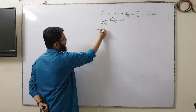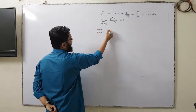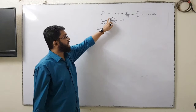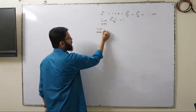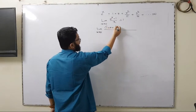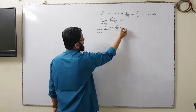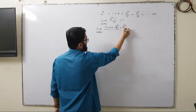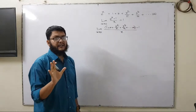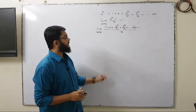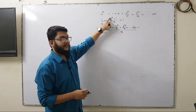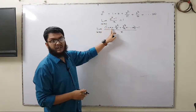Let us start: limit x tends to 0. If we start with the expansion, instead of e to the power x we put the value of the expansion. So we have 1 plus x plus x squared by 2 factorial plus x cubed by 3 factorial, all the way to infinity, minus 1, divided by x. What we have done here is replaced the value of e to the power x.